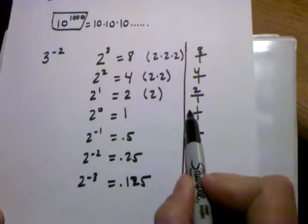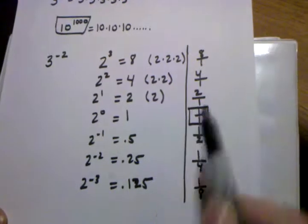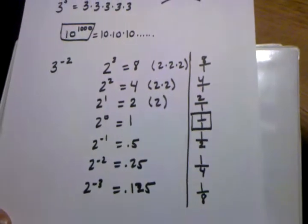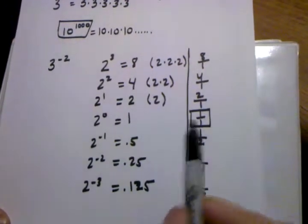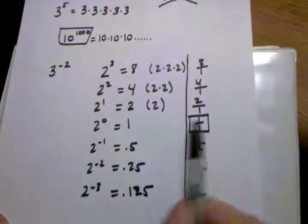If we start off with 2 to the 0 power, we just get 1 because anything to the 0 power is always going to be 1. So that kind of stays, that's sort of like, I see it as a center point.